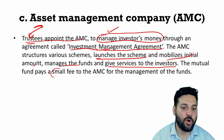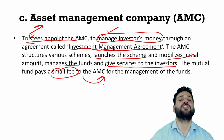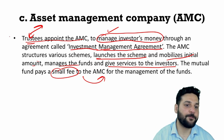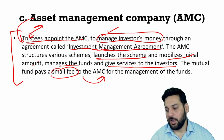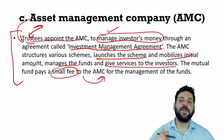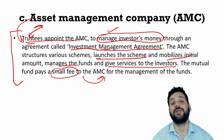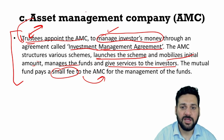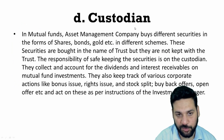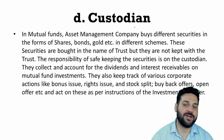The mutual fund pays a small fee to the AMC for the management of the fund — there is an expense ratio, normally around 1%. Asset management companies like HDFC Mutual Fund and SBI Mutual Fund manage people's money, launch various schemes, market them, and provide various services to investors. The basic purpose of an AMC is to manage people's money and launch schemes.